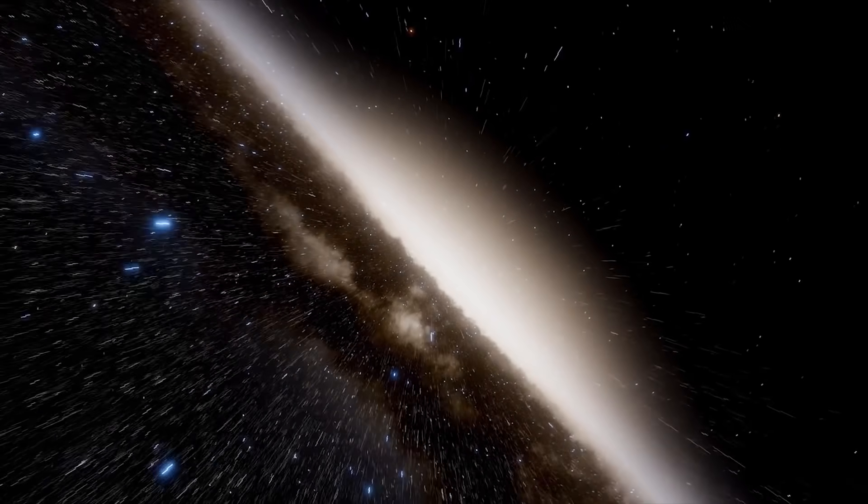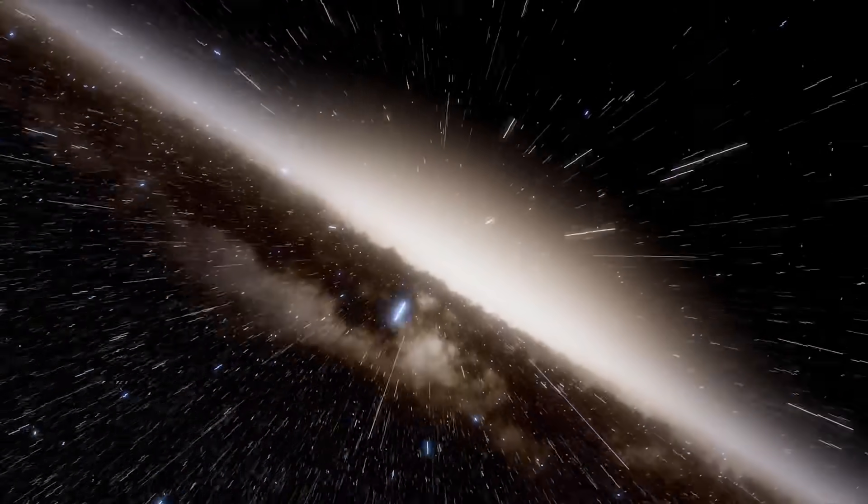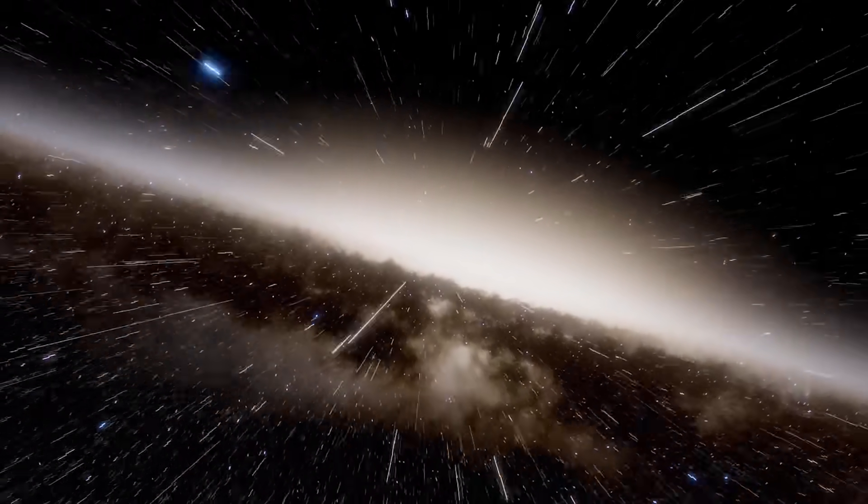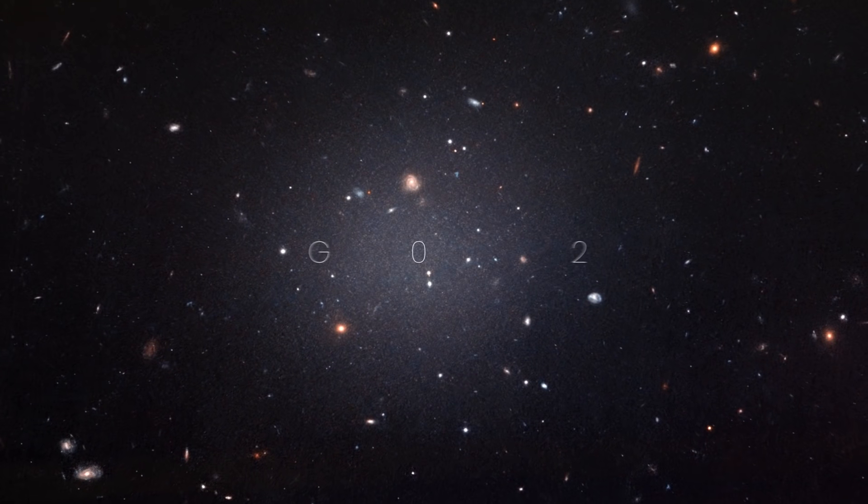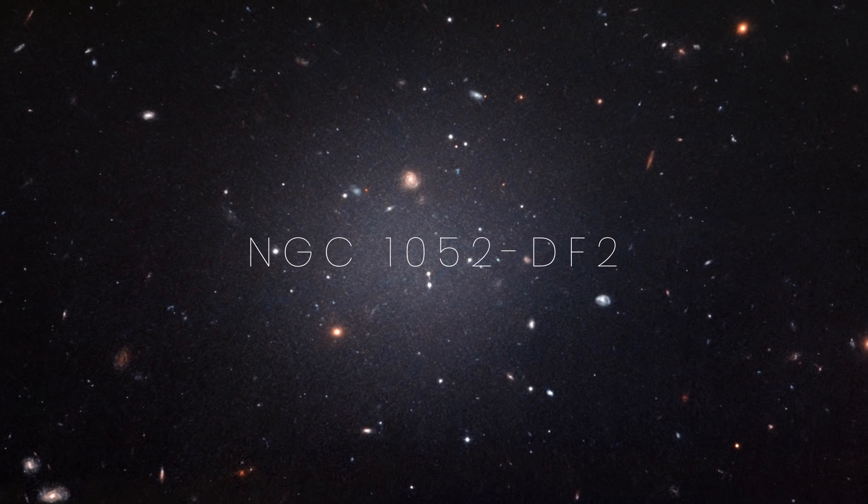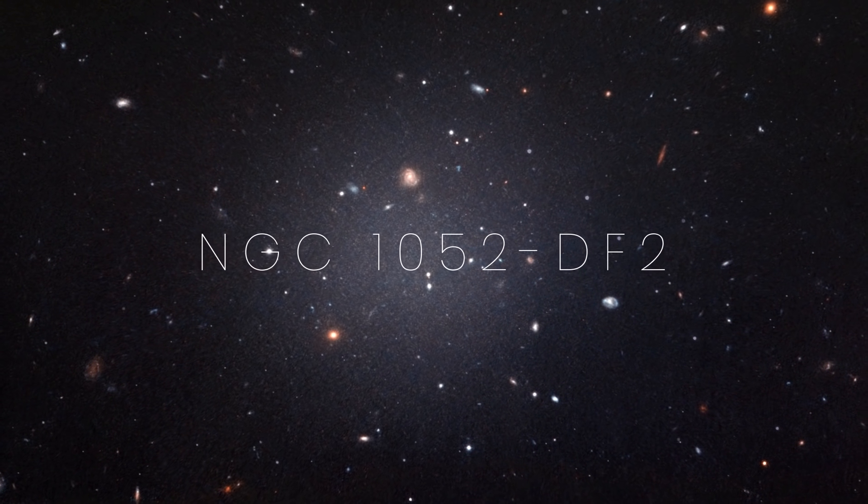In 2018, a team of astronomers announced that they have discovered the first known galaxy which contained an amazingly low amount of dark matter, almost zero. Its name? NGC 1052-DF2, or the more convenient, DF2.